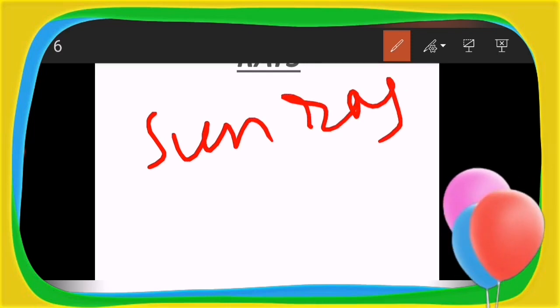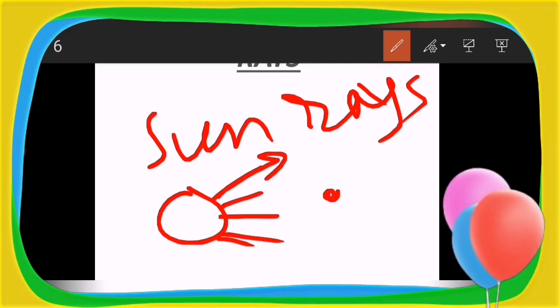And the last part, the last concept that we have to understand today is about rays. Children, we are already familiar with one word and that word is sun rays, correct? So this is the sun and these are its rays. This sun is nothing but a point you consider, and these rays that are moving forward are like this.